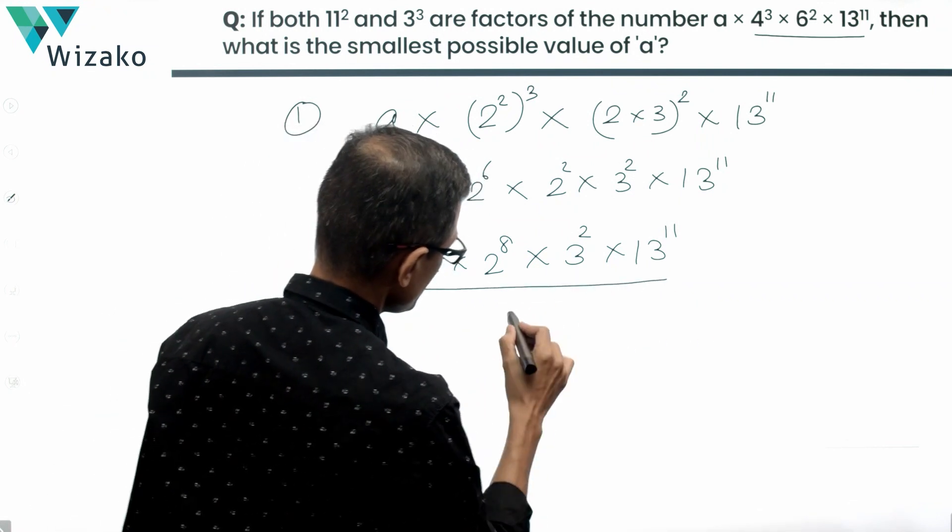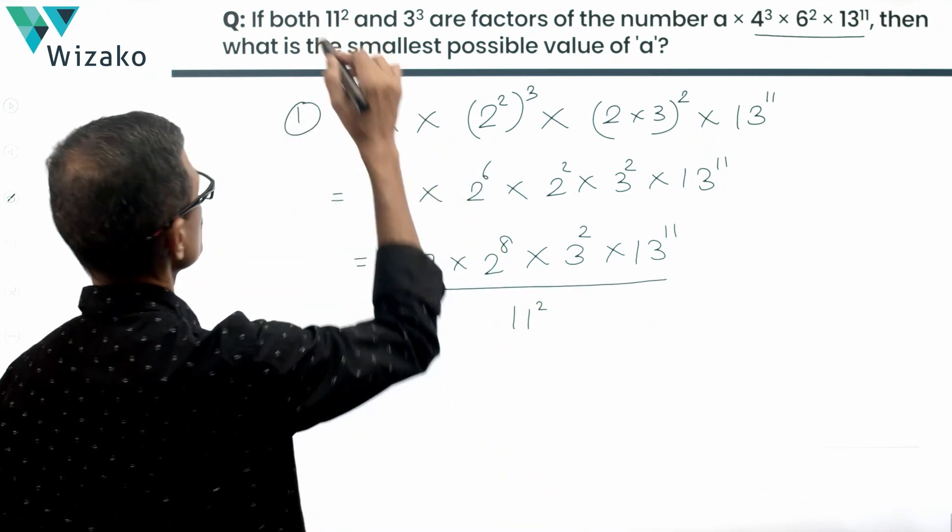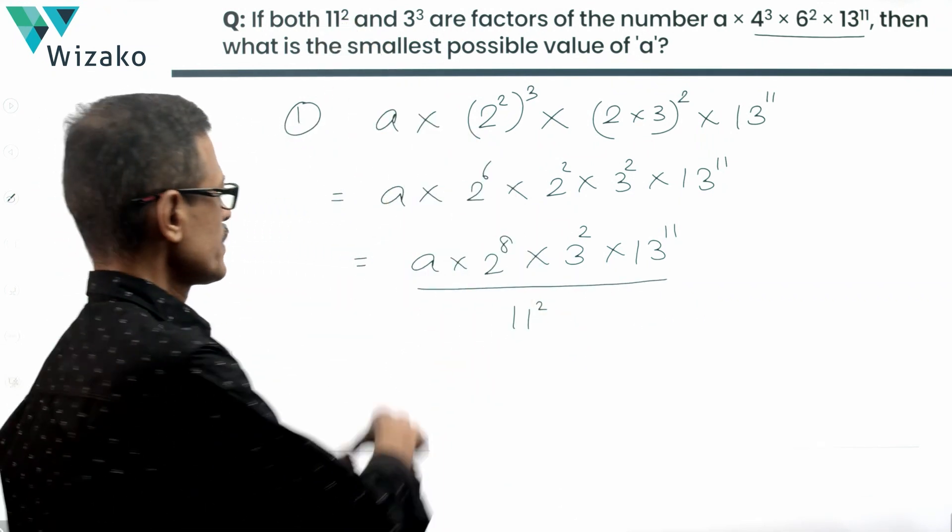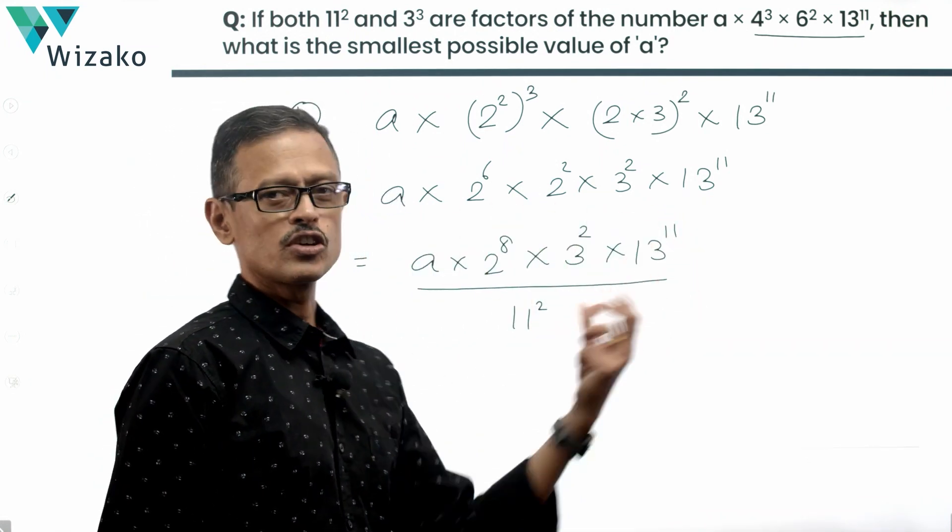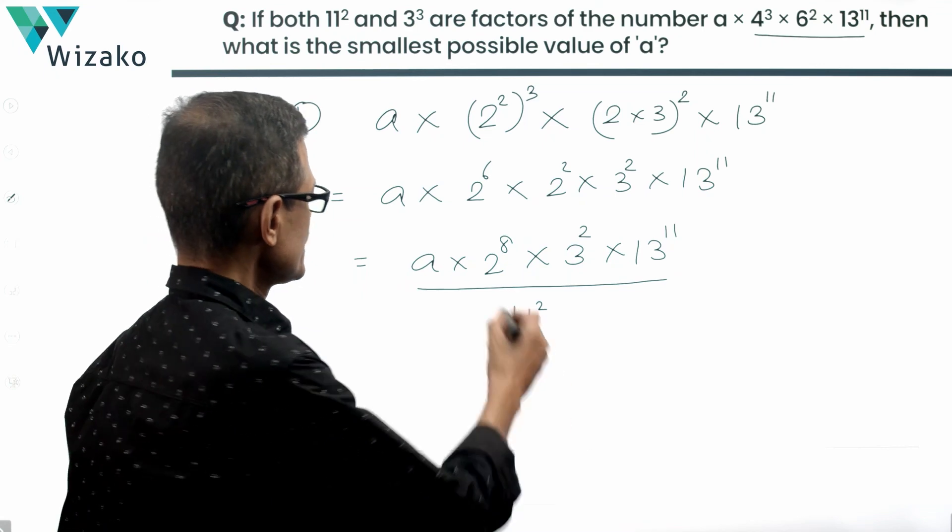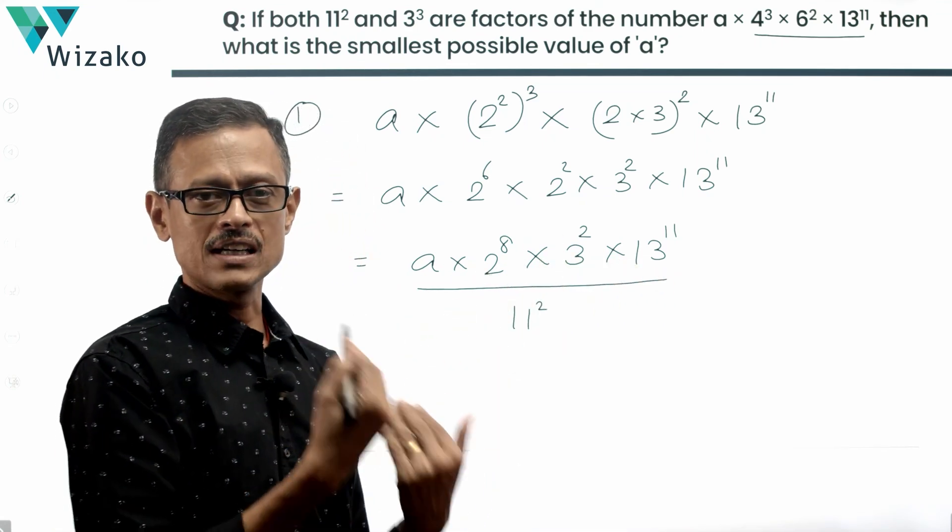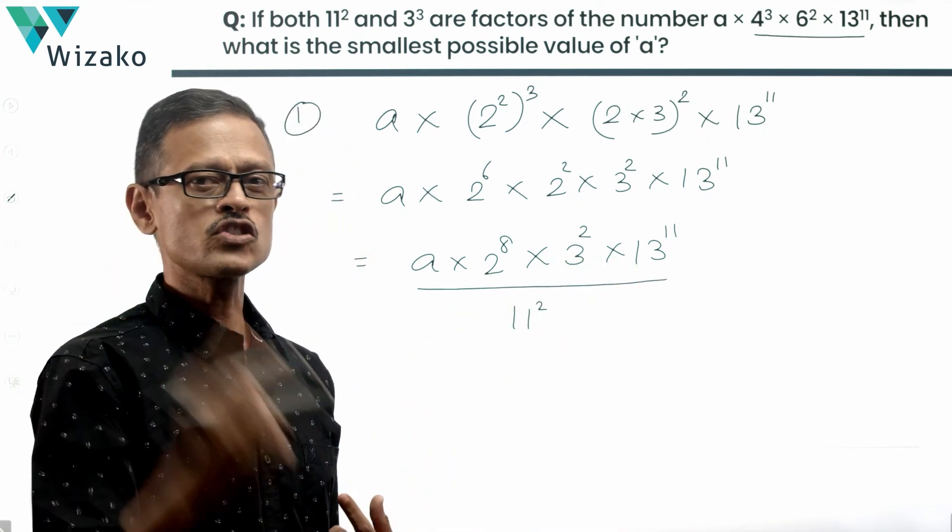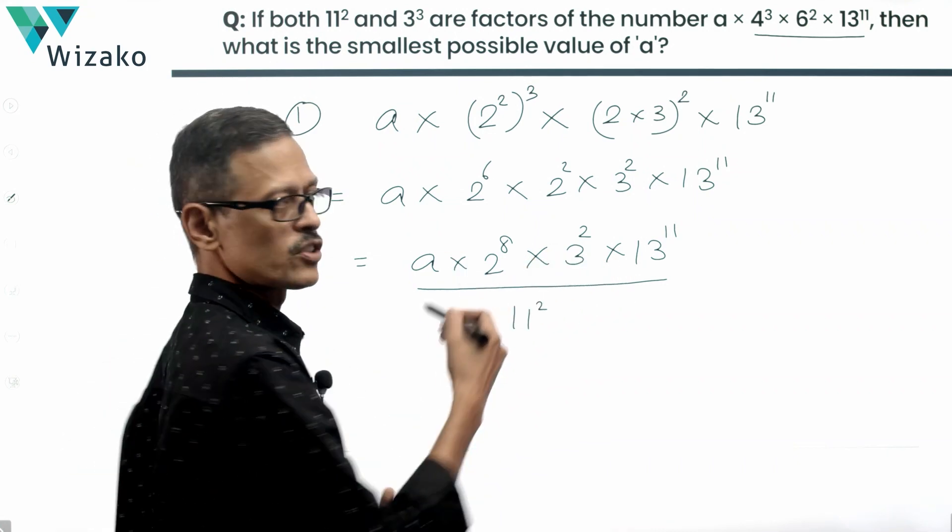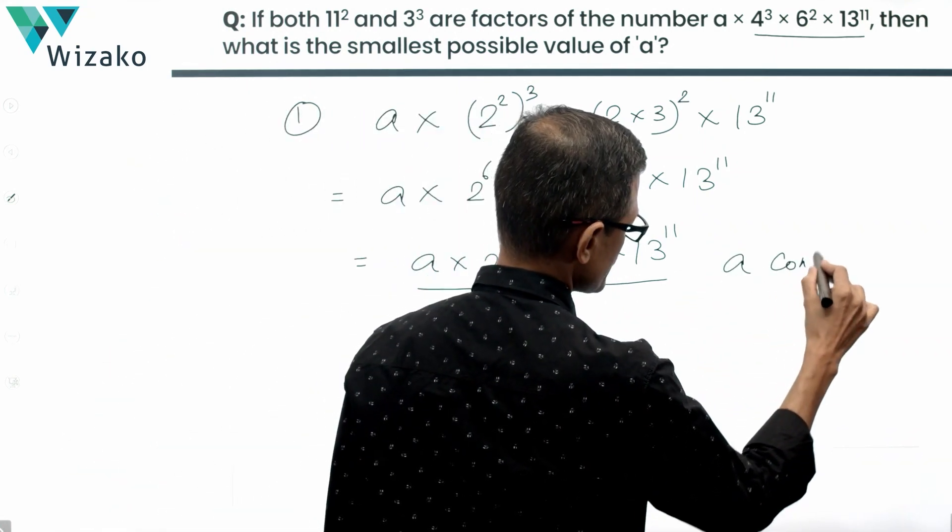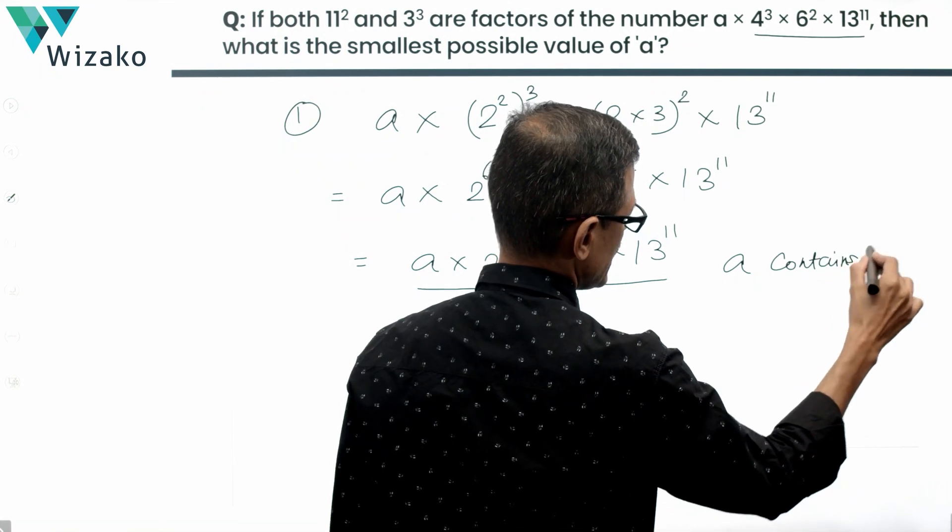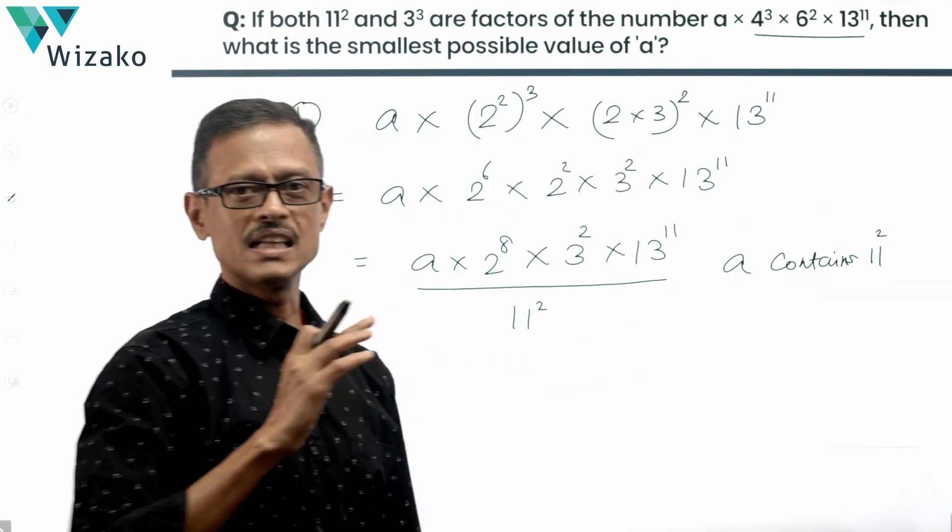This is divisible by 11 square. 11 square is a factor of this number. If this entire number is divisible by 11 square, then this number should contain 11 square in it. These three prime factors are not 11, which means that A needs to contain the 11 square if this number is to be divisible by 11 square. So A contains 11 square. So this is as far as 11 square goes.